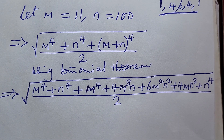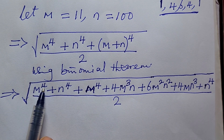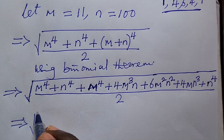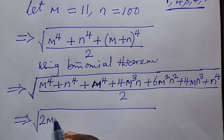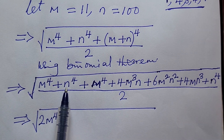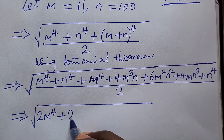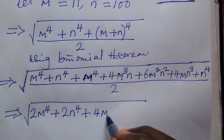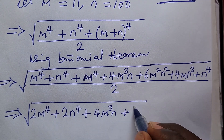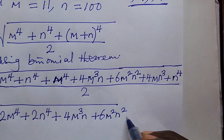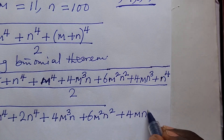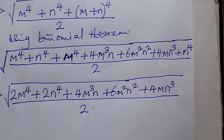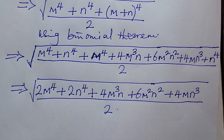Now we collect like terms. We have m^4 here and m^4 here, giving 2m^4. We have n^4 and n^4, giving 2n^4. The remaining terms are 4m³n plus 6m²n² plus 4mn³. So the expression becomes the square root of: 2m^4 plus 2n^4 plus 4m³n plus 6m²n² plus 4mn³, all over 2.